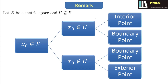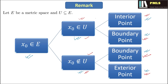We have a chart on your screen. If X₀ is a point in E, there are two possibilities: either X₀ is a member of U or X₀ is not a member of U. If X₀ is a member of U, then either X₀ is an interior point or it is a boundary point. If X₀ is not in U, then either X₀ is a boundary point or X₀ is an exterior point. Conversely, an interior point is certainly a member of U; an exterior point is certainly not a member of U; and a boundary point may or may not be a member of U. This simple chart explains the localization of points — interior, exterior, and boundary — with respect to a given subset in a metric space.